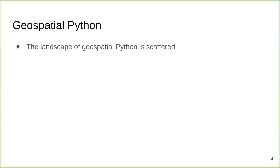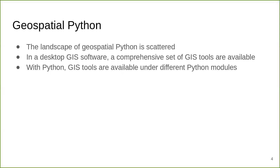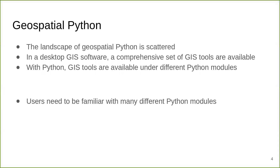Unfortunately, the landscape of geospatial Python modules is scattered. A traditional GIS software, such as ArcGIS or QGIS, provides a comprehensive set of GIS tools for a variety of spatial analysis tasks. With Python, GIS tools are spread out across multiple Python modules. As a result, users need to be familiar with many different Python modules and packages for complex analysis tasks to achieve the desired functionality.